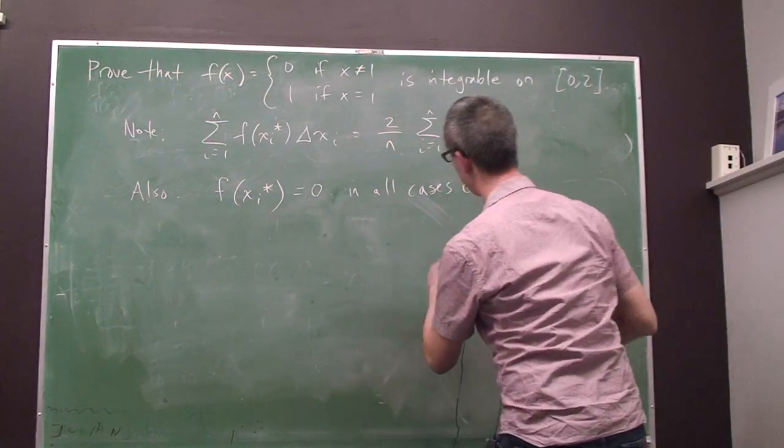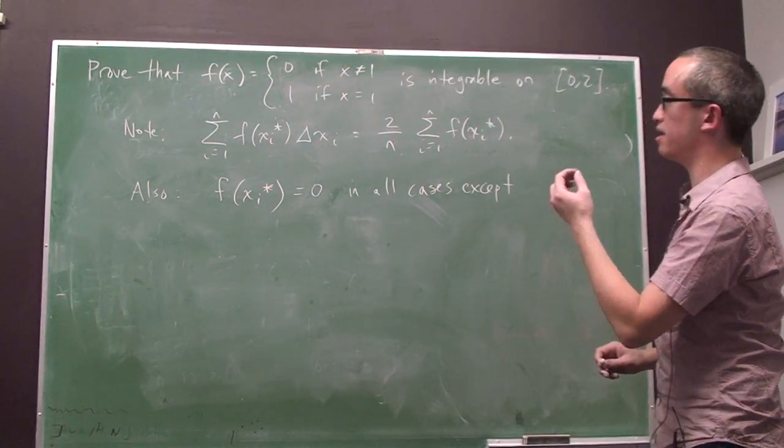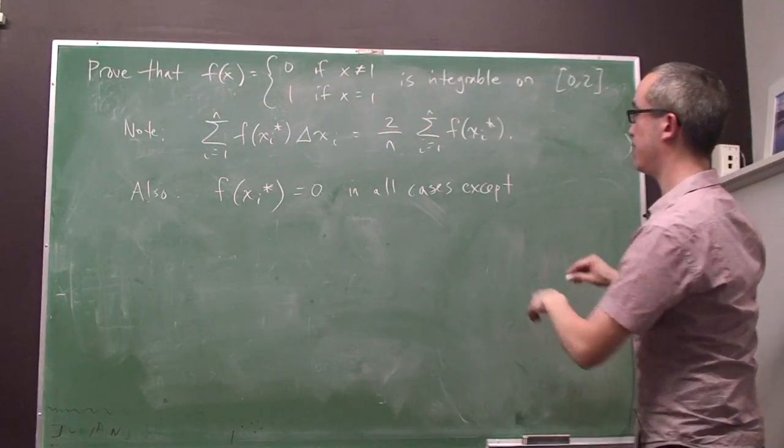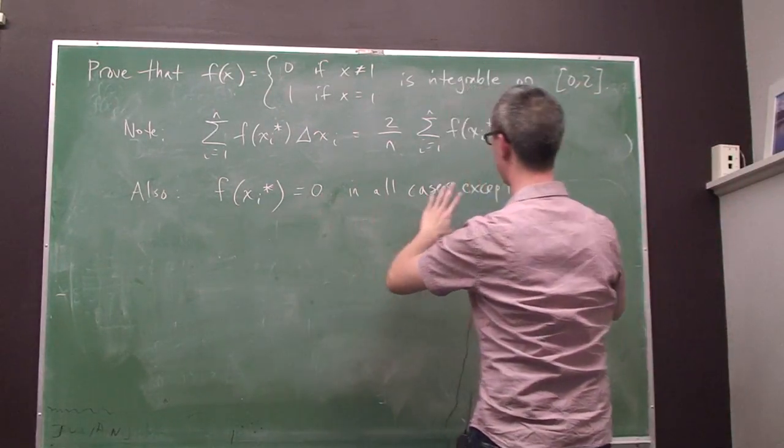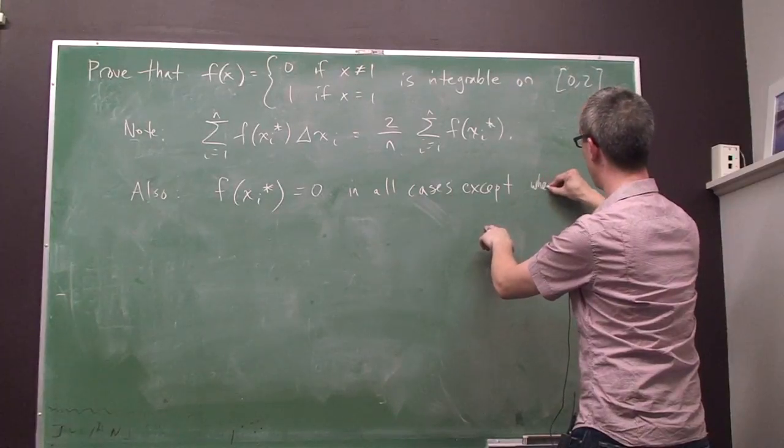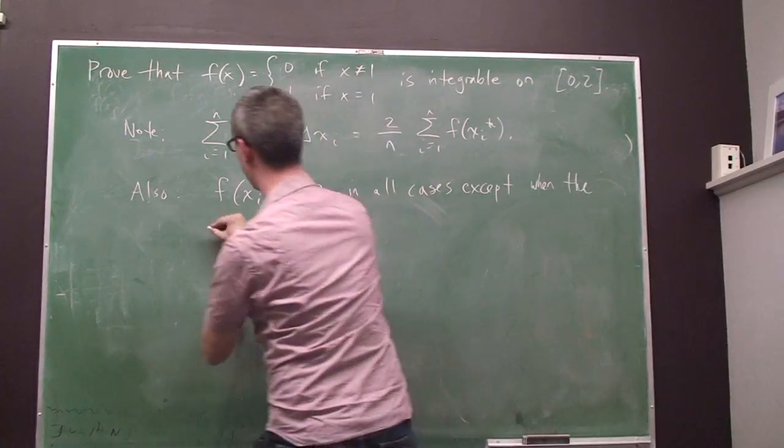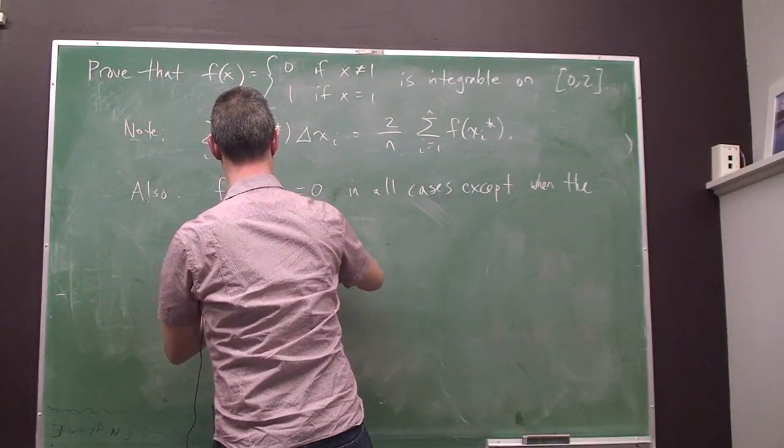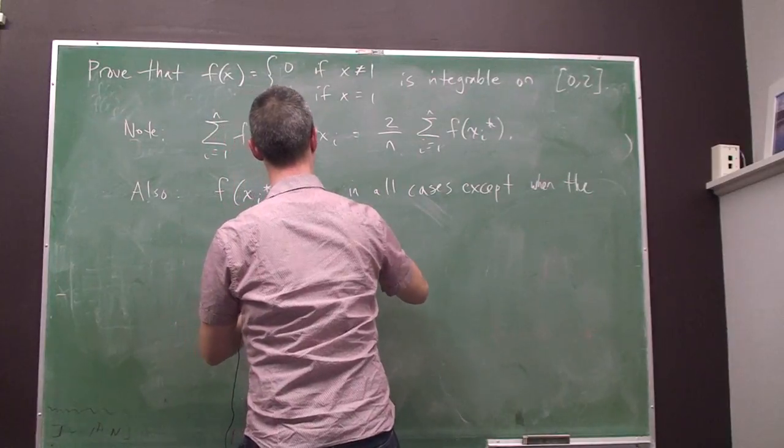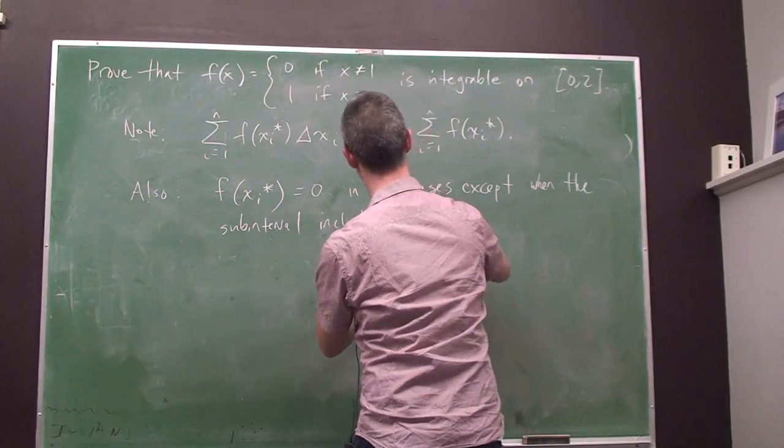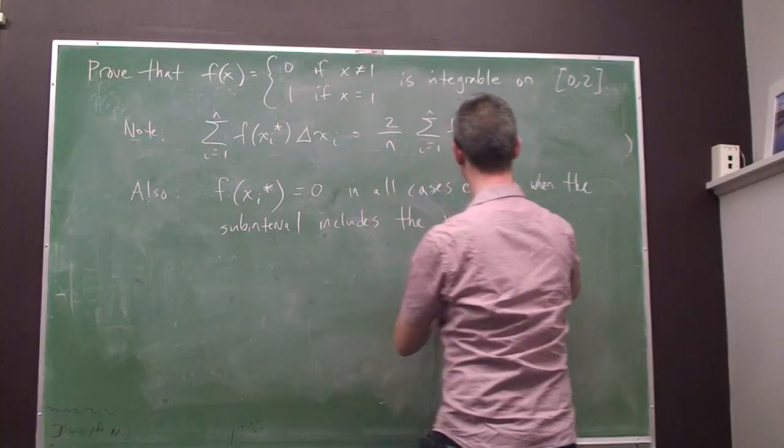And what are those two? Well, the subintervals that include the point 1. So, f of xi star is equal to 0 in all cases except when the subinterval includes the x value 1.